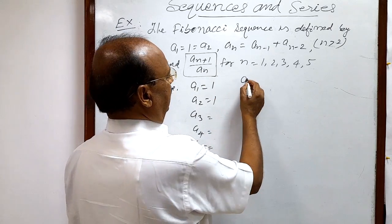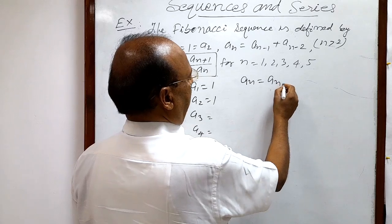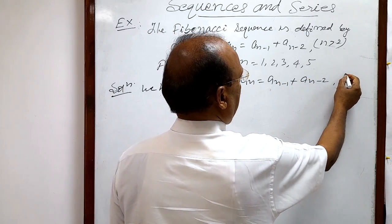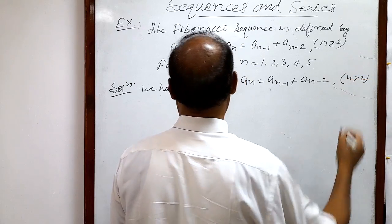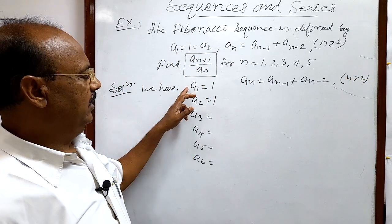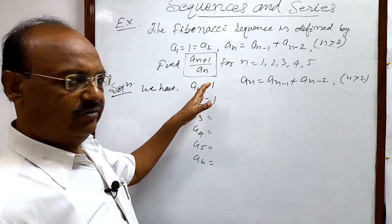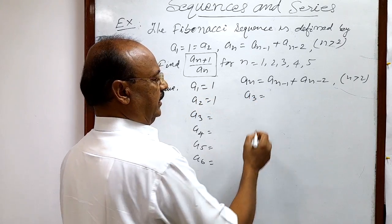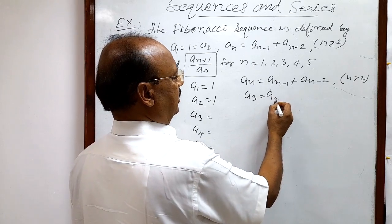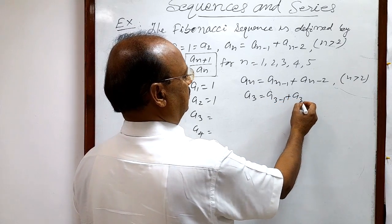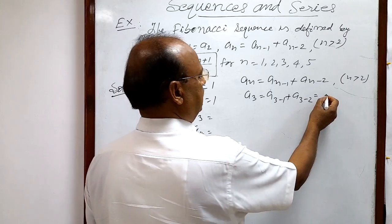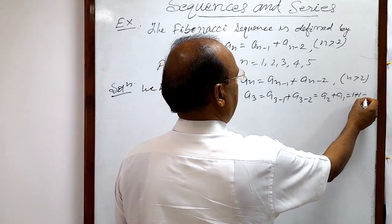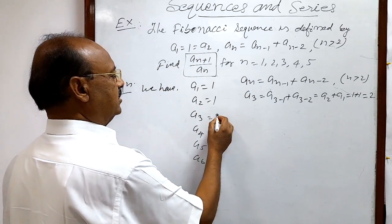We have a(n) = a(n-1) + a(n-2) for n greater than or equal to 2. a1 and a2 are already given as 1. Let us find a3: a3 = a(3-1) + a(3-2) = a2 + a1 = 1 + 1 = 2. So a3 = 2.